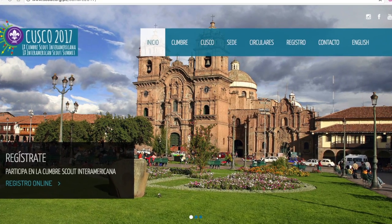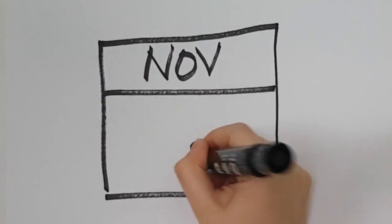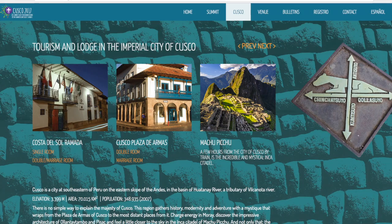The Inter-American Scout Summit is going to be held in the Convention Center of the Municipality of Cusco from November 24th to 26th, 2017, and it costs 450 US dollars.